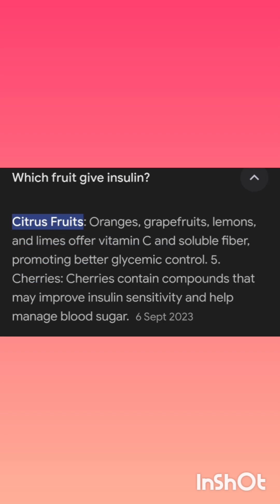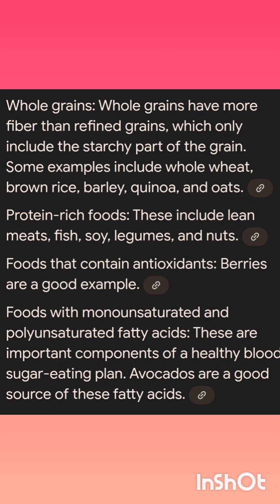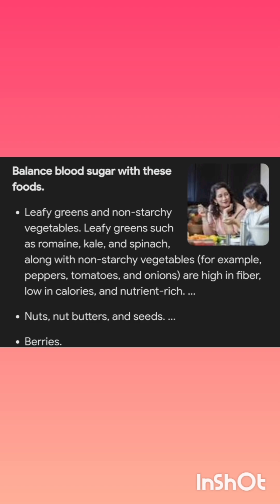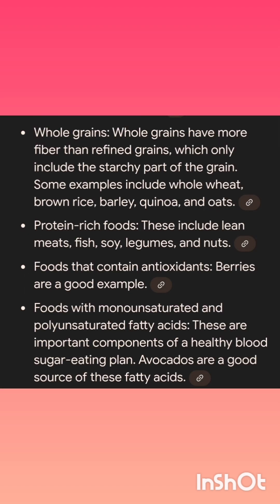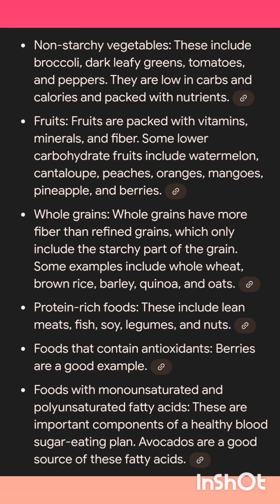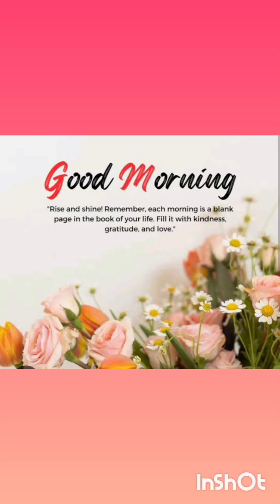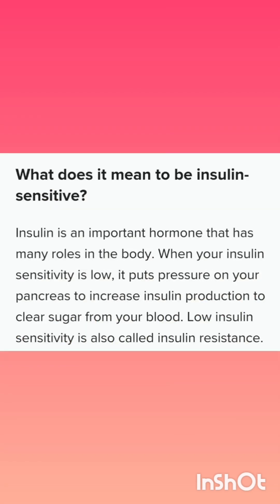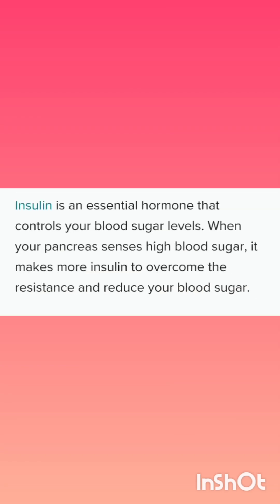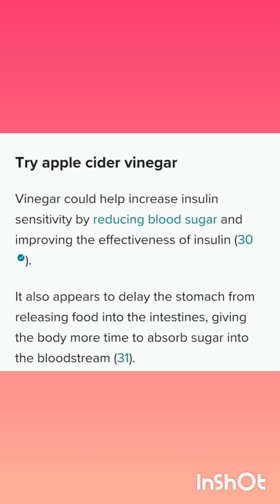Moringa leaves — drumstick leaves — are a great gift with rich medicinal properties. Whole grains like brown rice, barley, and oats are also beneficial. Rich leafy vegetables like spinach, Malabar spinach, amaranthus, quinoa, as well as soya and certain types of nuts are also helpful.